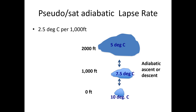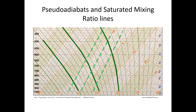Now let's talk about the saturated adiabatic lapse rate. This takes into consideration that as air becomes saturated and condenses, it causes condensation which provides a little bit of heat to the air — latent heat of condensation. This added heat causes the air to cool at a slower rate than when it's dry, approximately 2.5 degrees Celsius per 1,000 feet, though it changes with a lot of variables. These solid green lines represent the saturated adiabatic lapse rate. If there's a condensed parcel of air — like a cloud — and it's lifted, it cools at this rate.